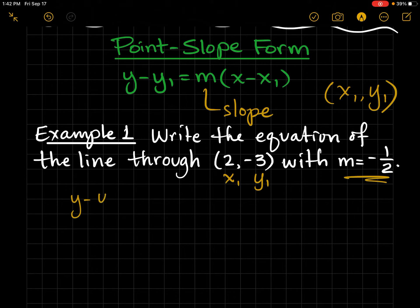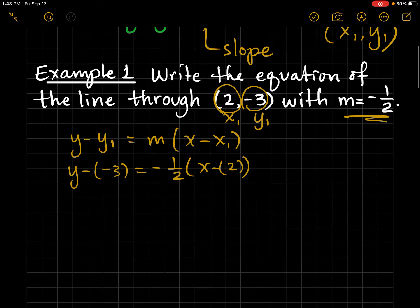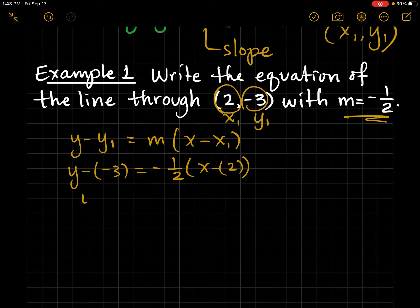Example 1: Write the equation of the line through (2, -3) with the slope of negative 1 half. So we have a point and a slope, and I'm going to call this x1, y1, and there's my slope. So I'm going to write down the formula and then start to plug into it. And then we're going to simplify once we get everything plugged in.